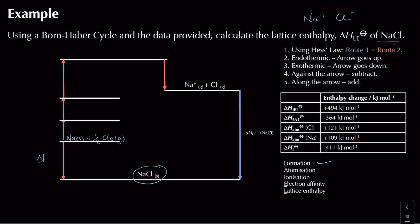That arrow represents the enthalpy change of formation. For the next arrow we need to atomize our two substances. Starting with sodium: to atomize it, I need to form one mole of gaseous atoms, so solid sodium turns to sodium gas, while chlorine stays untouched as a diatomic gas. Then in the next step I atomize the chlorine to get one mole of chlorine atoms as a gas, while sodium stays as a gas.